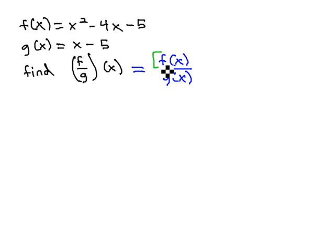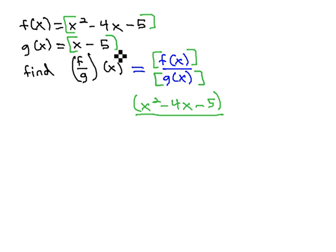And so, what we can do is replace f(x) with what it is. f(x) equals this whole polynomial, x² - 4x - 5. Notice, I'm using parentheses again. Always use parentheses when you make a substitution or a replacement. Over the g(x) function, and g(x) is this x - 5.